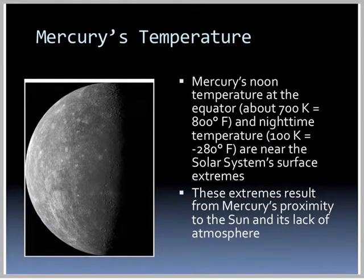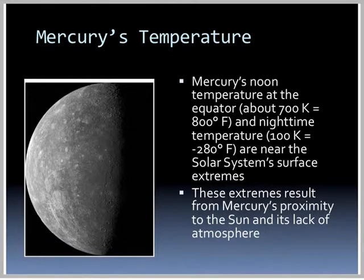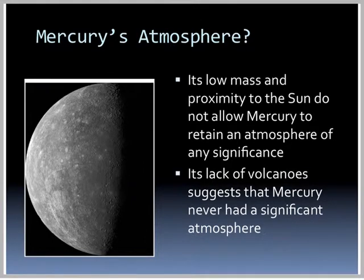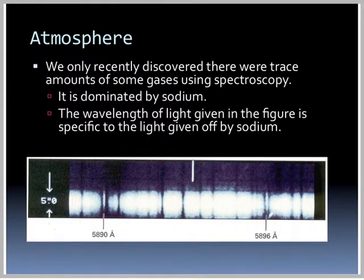Mercury's noon temperature at the equator is about 800 degrees Fahrenheit, and its nighttime temperature is 280 degrees below zero — over a thousand degrees difference between day and night. These extremes result from Mercury's proximity to the Sun and its lack of atmosphere. Its low mass and proximity to the Sun do not allow Mercury to retain an atmosphere of any significance, and its lack of volcanoes suggests it never had a significant atmosphere. Recently, trace amounts of gases have been discovered using spectroscopy, dominated by sodium.